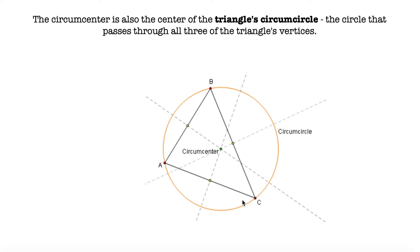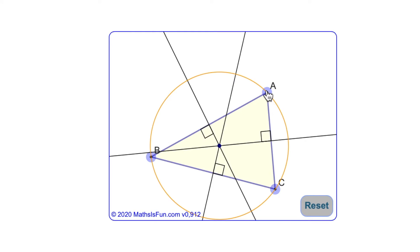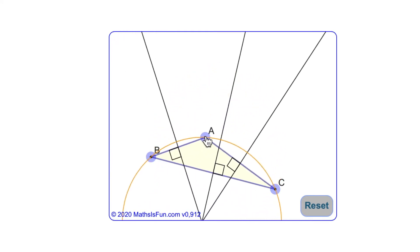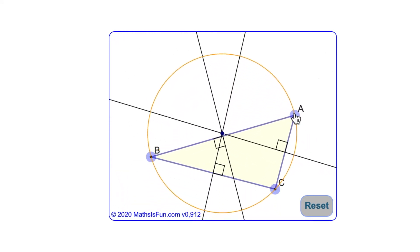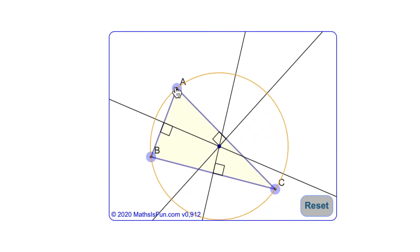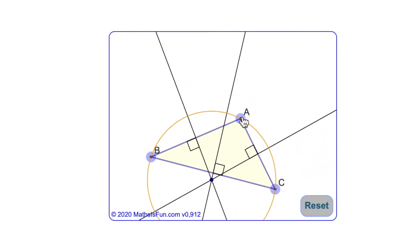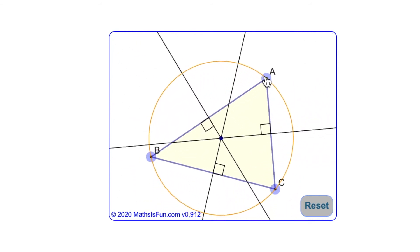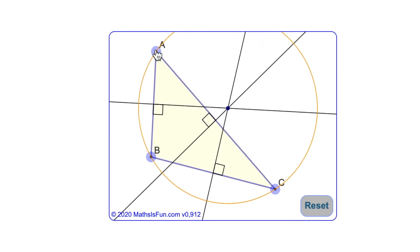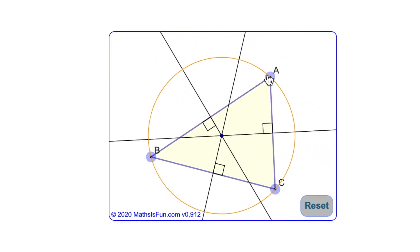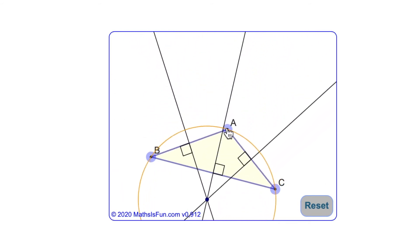If we put the needle of the compass in the circumcenter and open it to the radius of one of the vertices, we are going to be able to trace the triangle's circumcircle. The circumcenter can be inside or outside the triangle — as you can see, I'm showing different triangle sizes and styles, and you can see how the circumcenter and the circumcircle change.